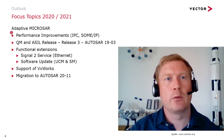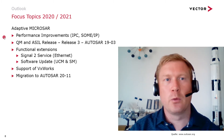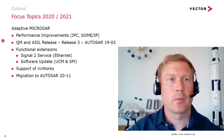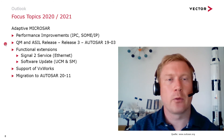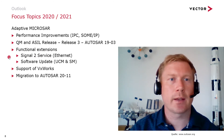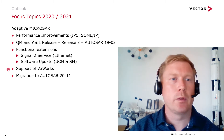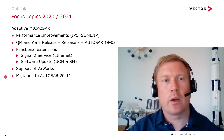Looking at this year and next year: the main topics we'll focus on in our Adaptive MICROSAR development include first, continuing to improve overall runtime performance of the ECU. Then, as mentioned, we'll deliver our QM and ASIL release for our 1903 Release 3. There will also be significant functional extensions — signal-to-service and software update are two of the most significant features coming next year. We also consider supporting VxWorks as another widely-used operating system, and we plan a migration to the AUTOSAR 2011 standard next year.